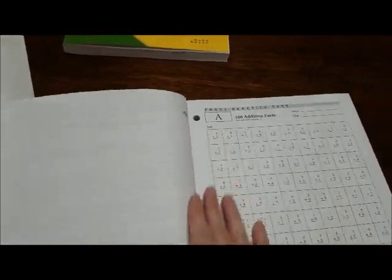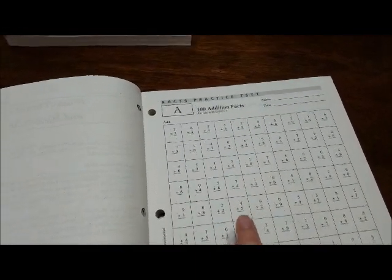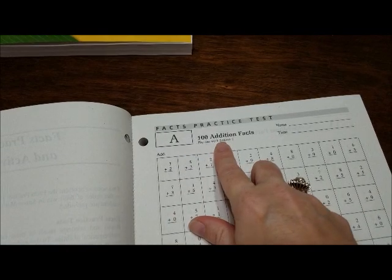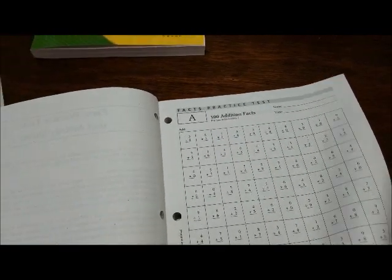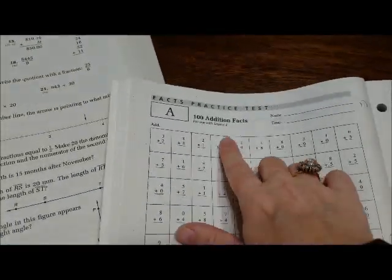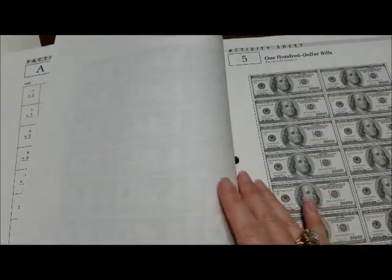And every one comes with a time test. So this is going to be reviewing their addition. That's 100 facts. And it goes with lesson one. And then they'll come over here and be with lesson two. So it's just kind of reviewing them.